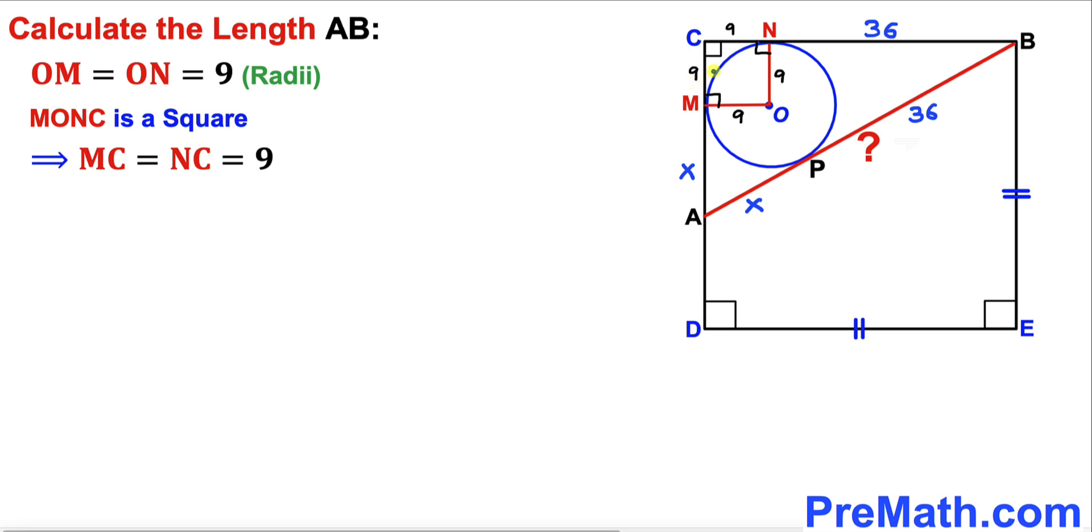Now we can see that the total length of CA is going to be 9 plus x, so I can write x plus 9. Likewise, the total length of AB is going to be x plus 36.